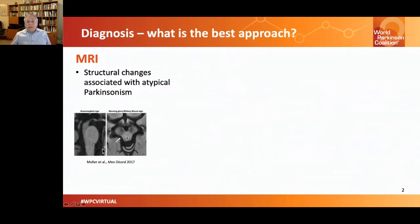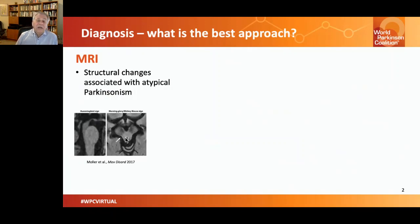This just shows standard MRI in progressive supranuclear palsy, with thinning of the midbrain shown from the side and from above. You can actually do formal measurements quite easily to get an index that tells you about the likelihood of having progressive supranuclear palsy. But importantly, MRI can do other things besides just looking at simple structure.